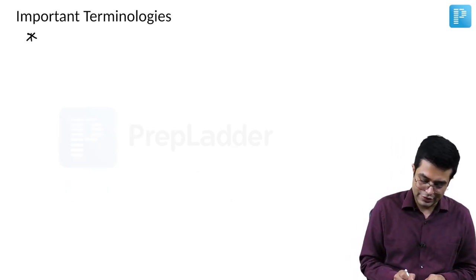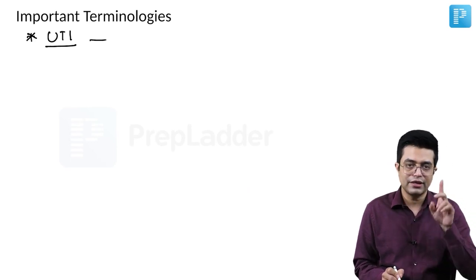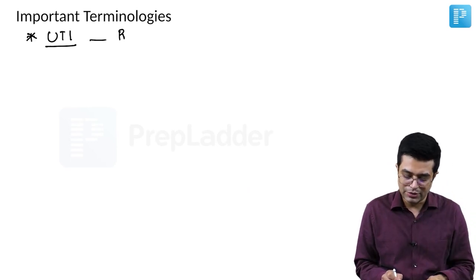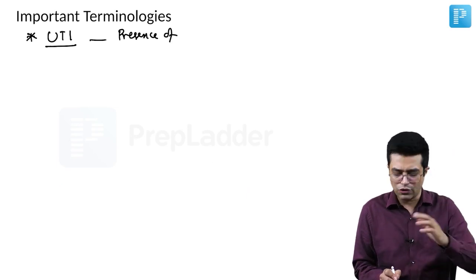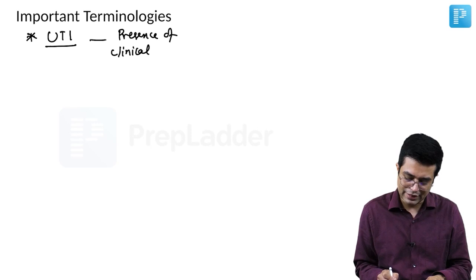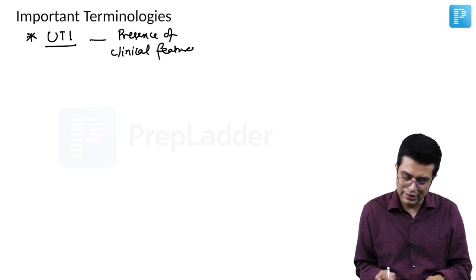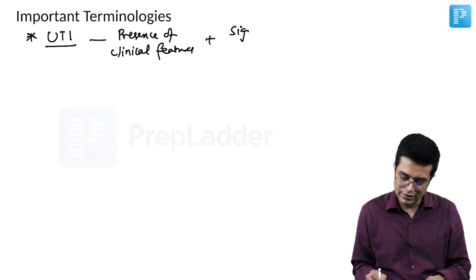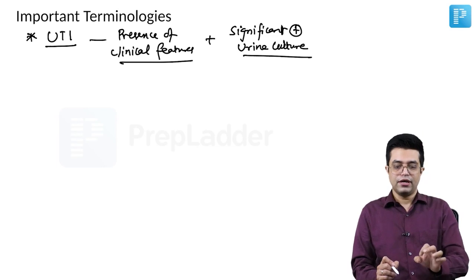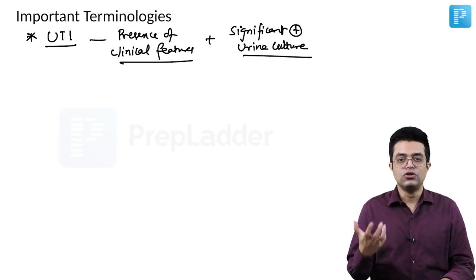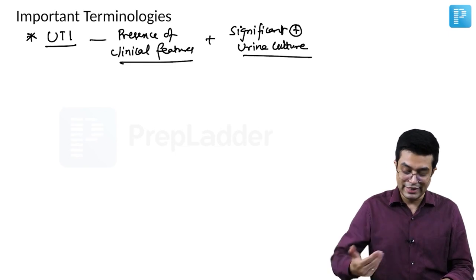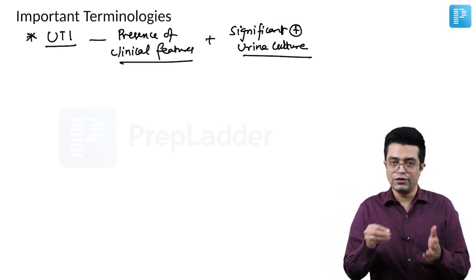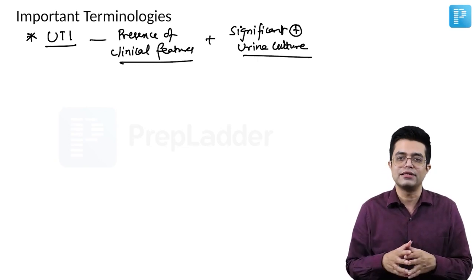The third definition is UTI. What is UTI? UTI is combination of two things: presence of any specific or non-specific clinical features, that is any sign and symptoms should be there along with a significant positive urine culture. Only when both the conditions are fulfilled, we will call it as UTI. If there is no clinical feature, there is no such thing in this world as asymptomatic UTI.